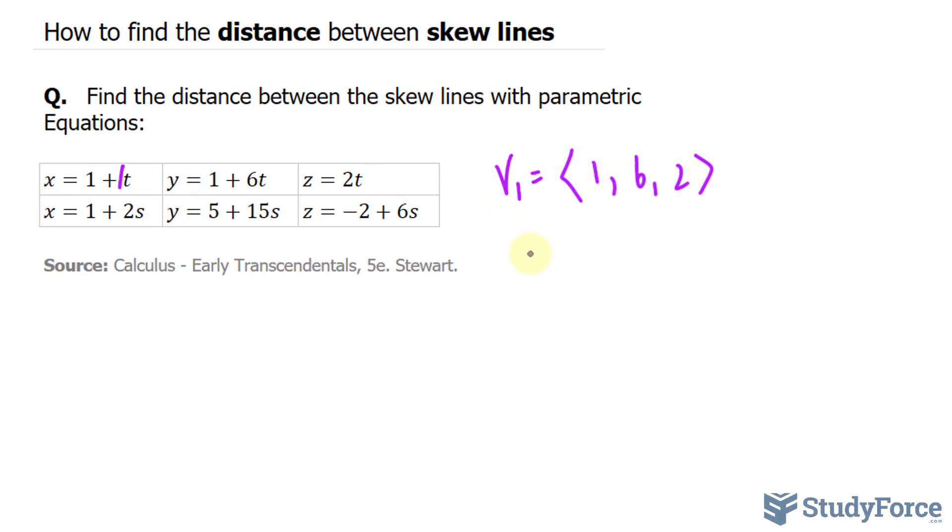The direction vector for the second set of parametric equations is 2, 15, and positive 6. The reason why this is important is because we technically have two direction vectors, and if we take the cross product of these two direction vectors, we'll end up with a third vector that is perpendicular to both. I'll explain why that's important in a moment.